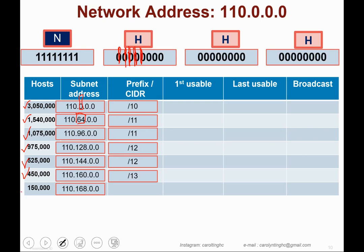For the last requirement of 150,000 hosts, you use slash 14. With slash 14, 2 host bits remain. Two to the power of 2 is 4. Adding 4 to 168 gives 172, so the next subnet address is 110.172.0.0.